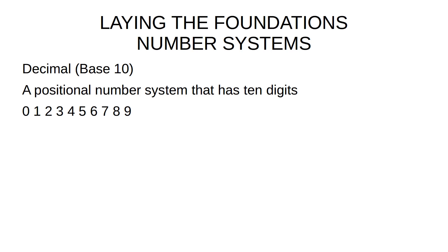Now let's have a look at number systems. We'll start with the most common, which is the decimal number system, using those Hindu-Arabic digits. This is a positional number system, with digits from 0 through to 9. When we say positional, we mean that the position of the digits in the number represents the magnitude of that digit. If the digit is on the far right-hand side, it's in the ones column; next to the left is the tens column; left again is hundreds; left again is thousands.